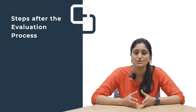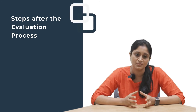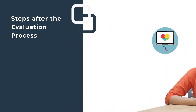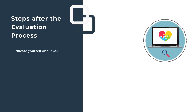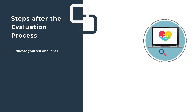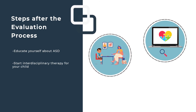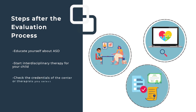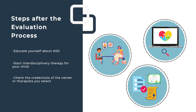Once you have your evaluation, there is a wealth of knowledge available about ASD — try not to get overwhelmed. You are going to be your child's biggest advocate, and the common link between therapists, school, and extended support network. The more educated and accepting you are of the diagnosis, the better for your child. Start interdisciplinary therapy as soon as possible — speech, language, occupational therapy, behavior therapy, and learning support. Ensure the center and therapists are licensed and board certified.